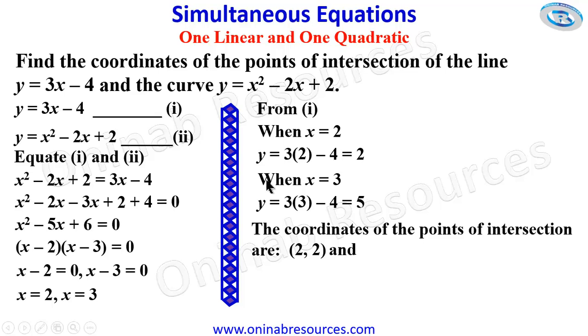So the first point there is 2, 2 and when x is 3, y is equal to 5. We have it as 3, 5. These are the coordinates of the points of intersection of the line and the curve.